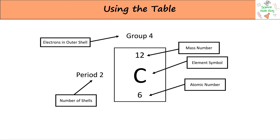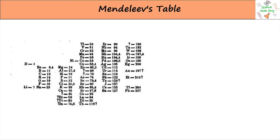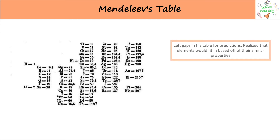The first and original Periodic Table was developed by Dimitri Mendeleev. Many other scientists had tried to group elements together before, however he realised that not all the elements had been discovered, and he left gaps in his table with question marks as predictions for future elements.